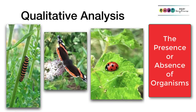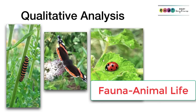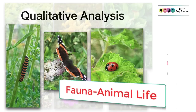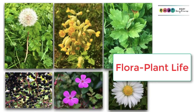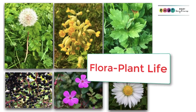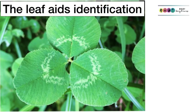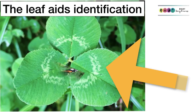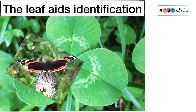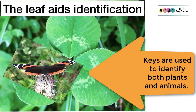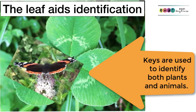Let's look at qualitative analysis. We are looking for the presence or absence of particular organisms, so you're checking the variety of animal life — fauna — and plant life — flora — in your ecosystem and making a record of everything you find. Qualitative analysis is identifying all the plants and all the animals in your ecosystem, and you're going to do this by means of using keys.